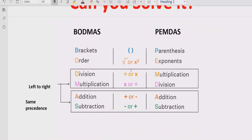Step number three, you have to solve division and multiplication. You go left to right in your expression and find out which comes first — division and multiplication have similar precedence, so you solve whichever comes first. Similarly for addition and subtraction, we follow the same rule: solve addition first if it is coming first, and solve subtraction first if it is coming first.